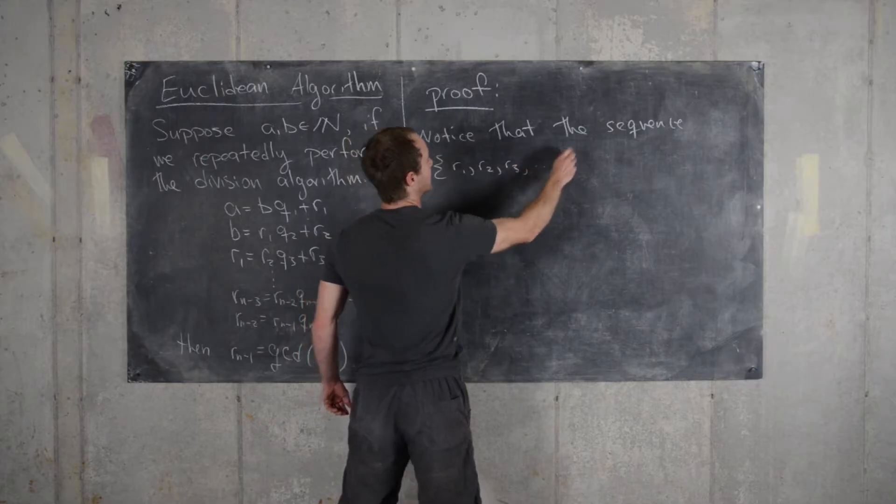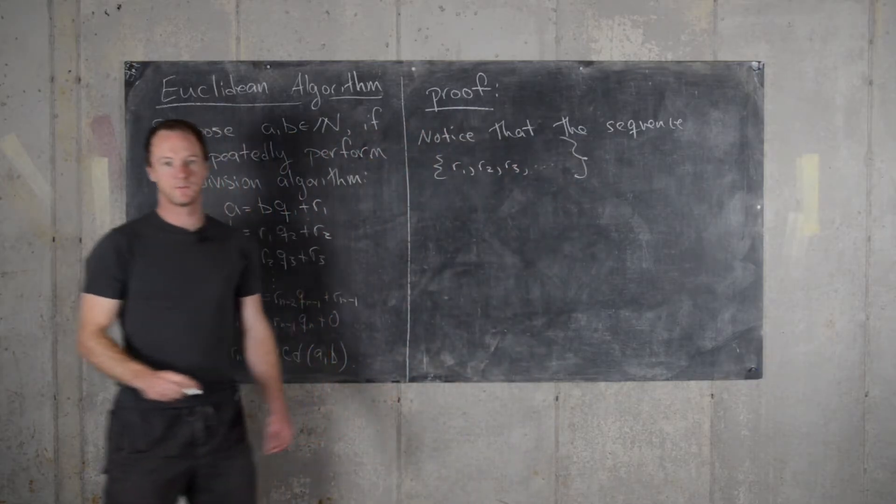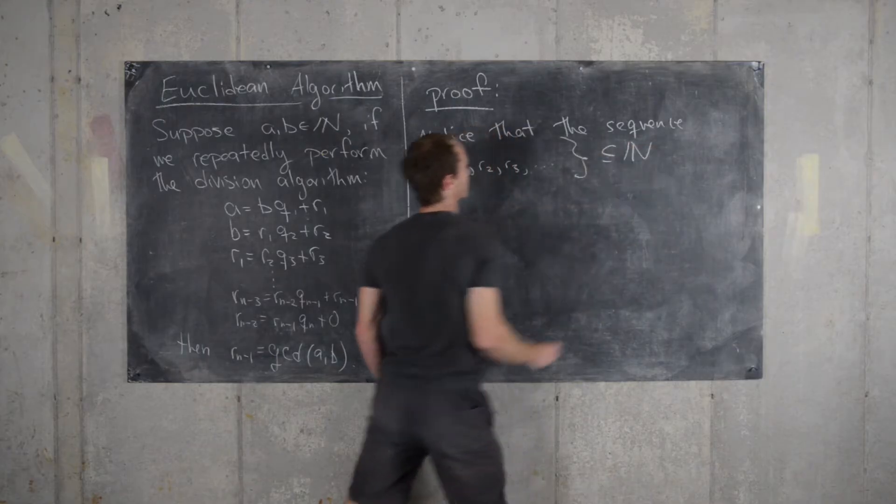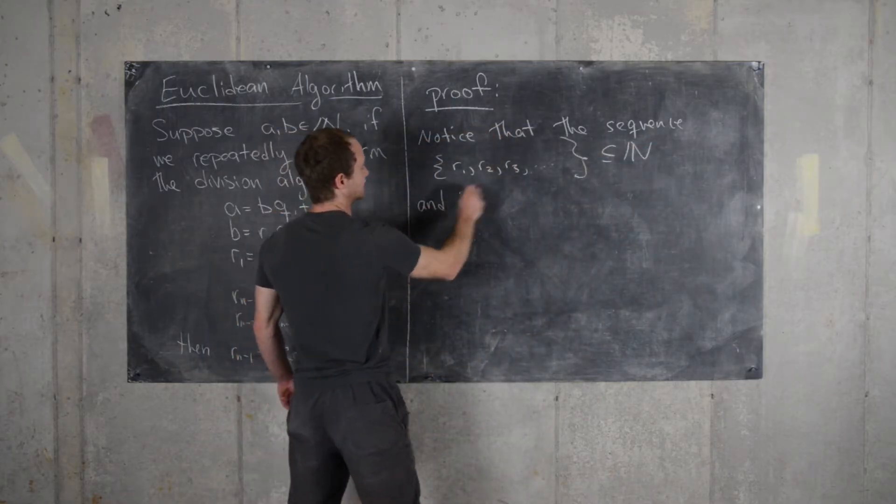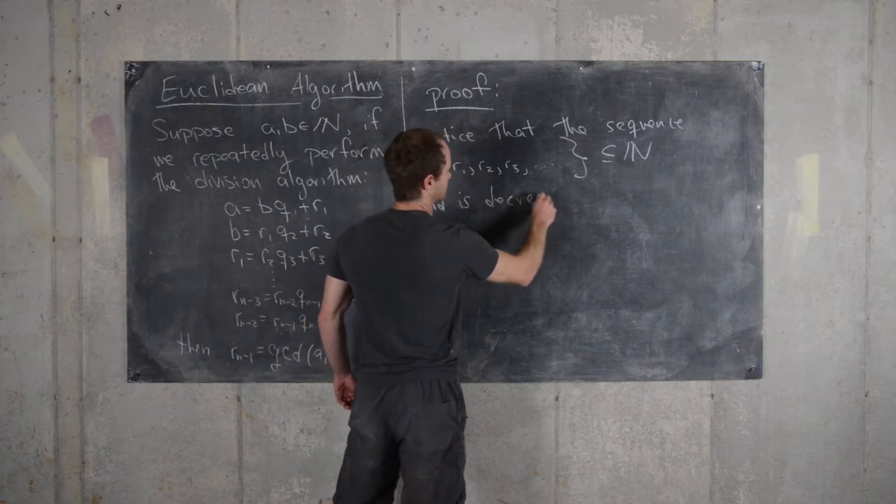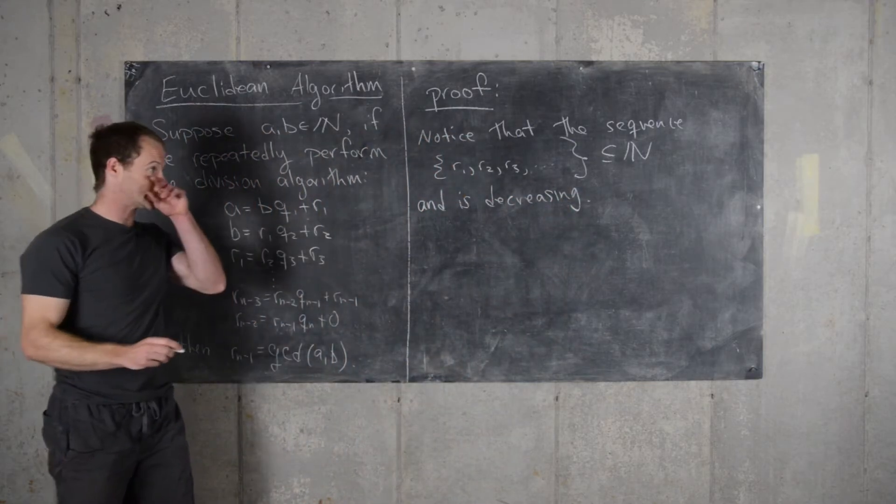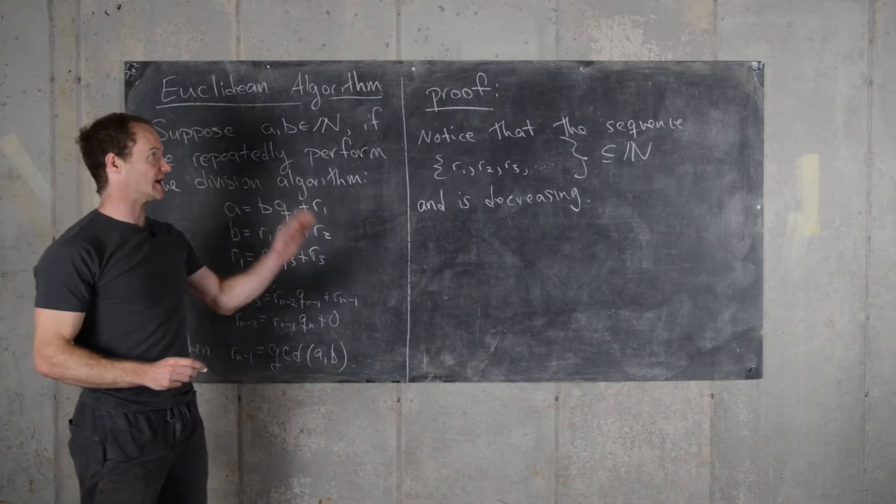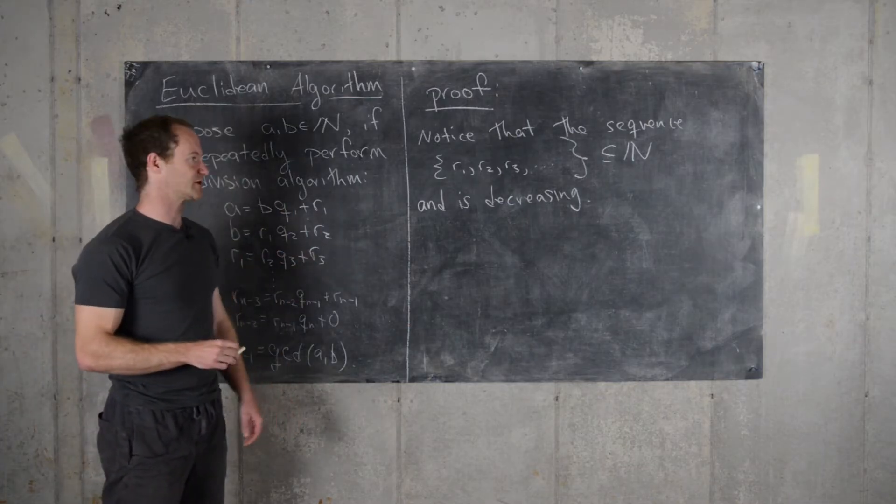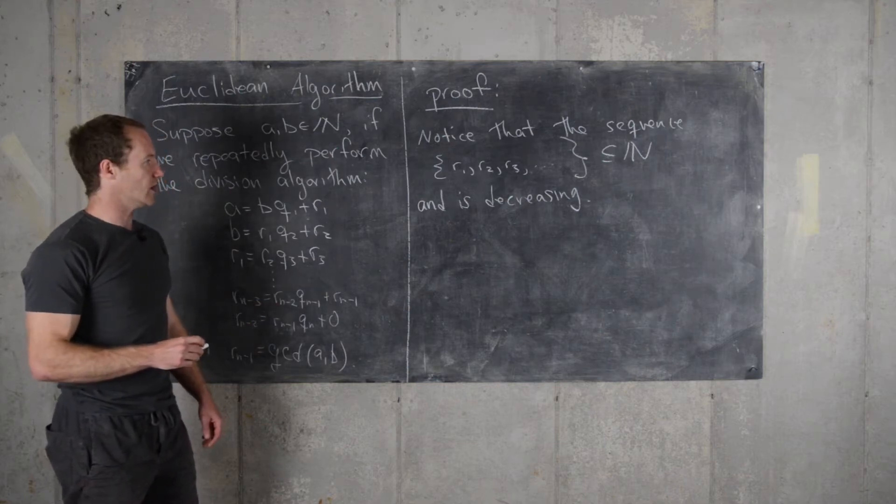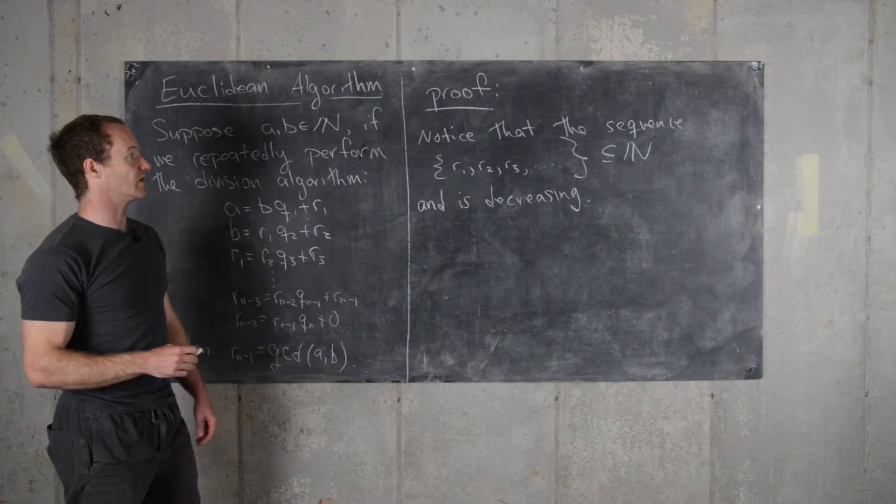Let's notice that the sequence given by R1, R2, R3, and so on and so forth. This is a sequence of natural numbers and is decreasing. So since it's decreasing, it has to truncate somewhere by the well-ordering principle.